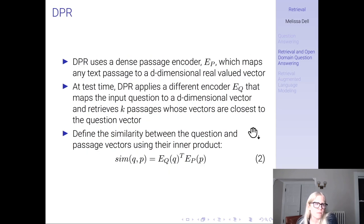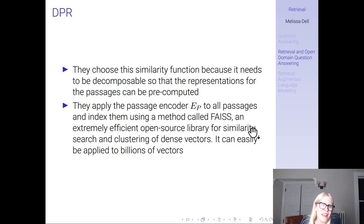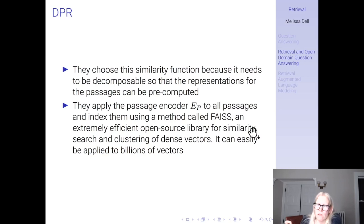A seminal paper in this space is DPR, produced by Facebook AI Research in 2020. DPR uses a dense passage encoder which maps any text passage to a 768-dimensional vector. At test time, DPR applies a different encoder — the query encoder — that maps the input question also to a 768-dimensional vector and retrieves the k passages whose vectors are closest to the query vector. It defines similarity between the query and passage vectors using their inner product, which is chosen because it needs to be decomposable so that passage representations can be pre-computed.